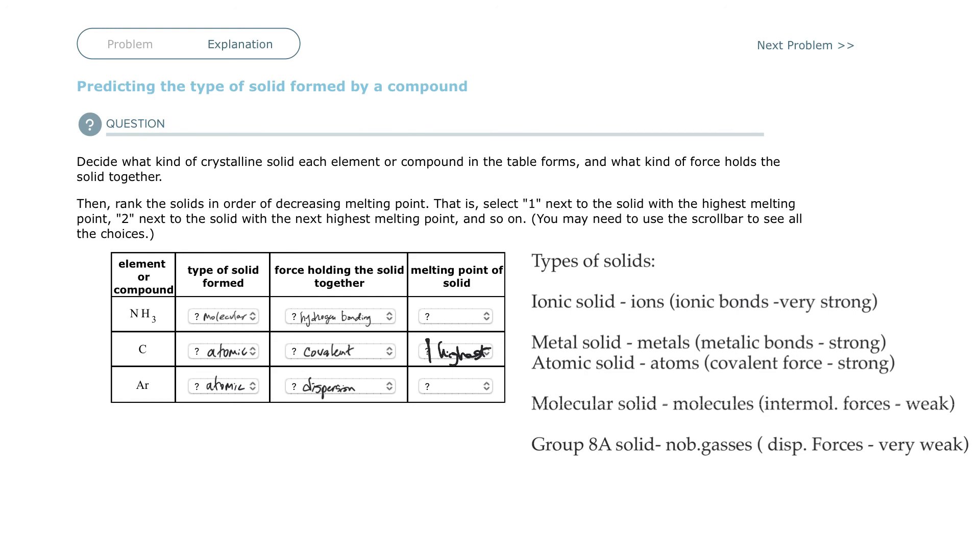And what is two? Well, two would be the ammonia, which is got hydrogen bonding, which is stronger than just London forces. So this is number two. And then the argon, which is a group 8 noble gas, is going to be three, and I guess that would be the lowest.